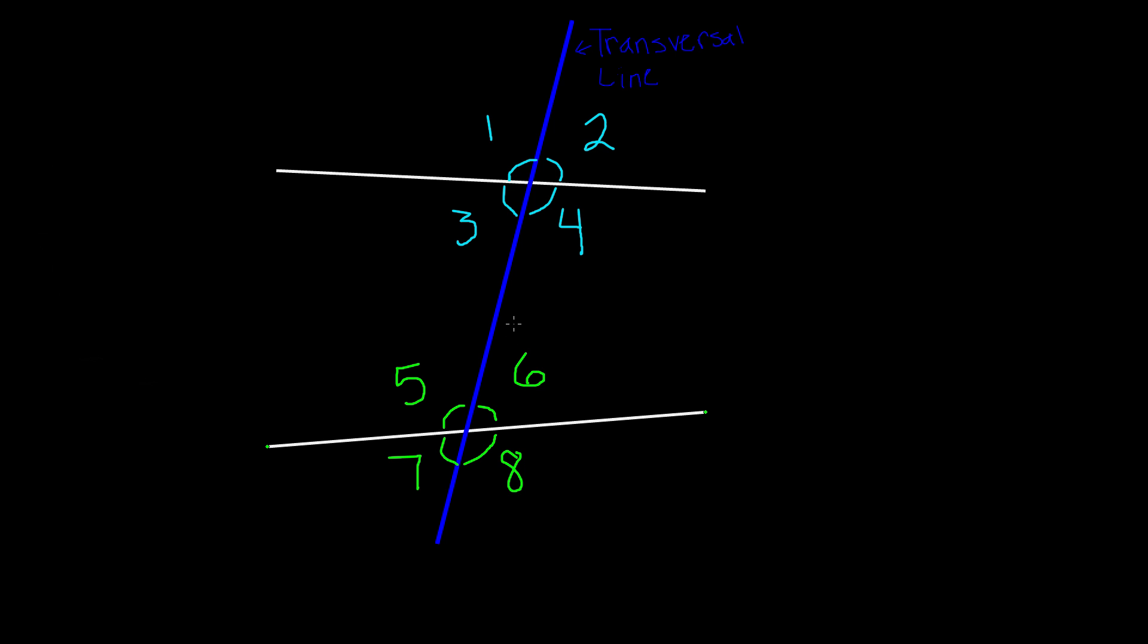Now, the alternate interior angles will be the angles that are opposite and inside the two lines. So, angles 3 and 6 are alternate interior angles because they're inside the two lines and they're opposite. So, these are alternate interior angles.